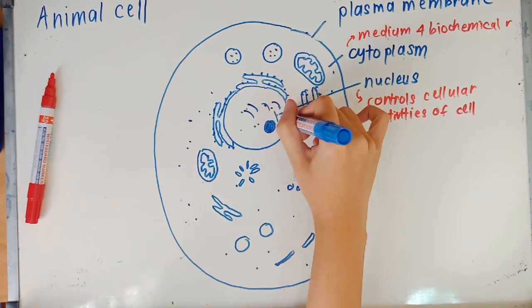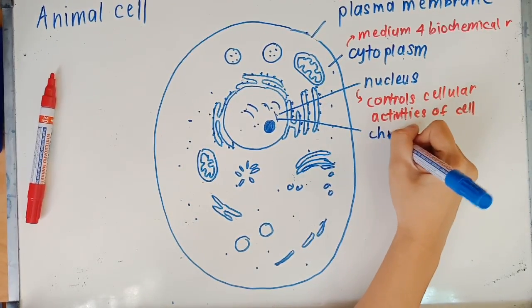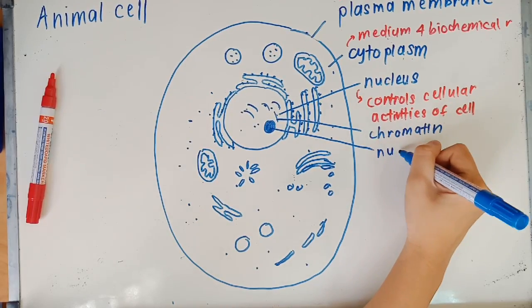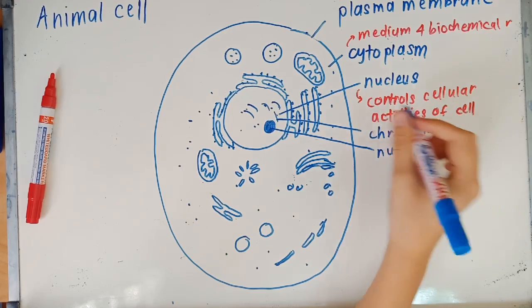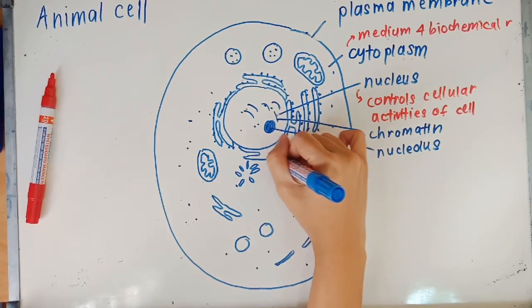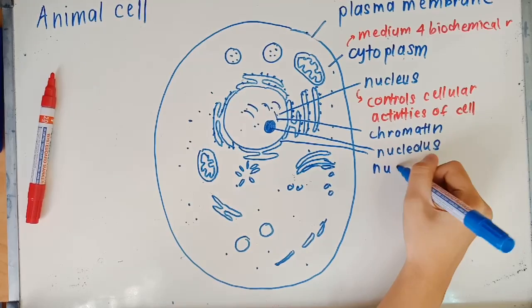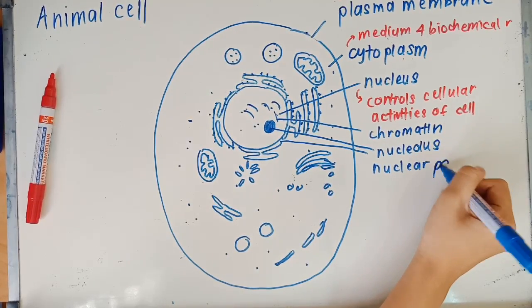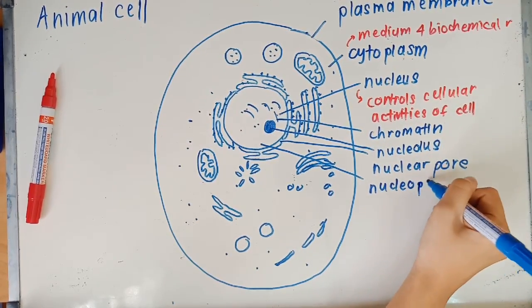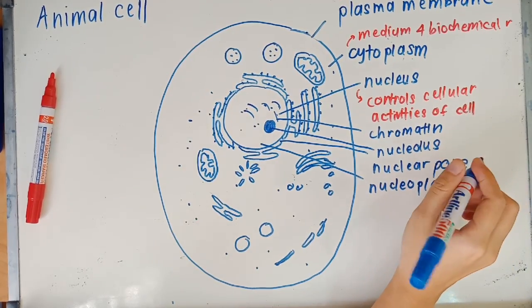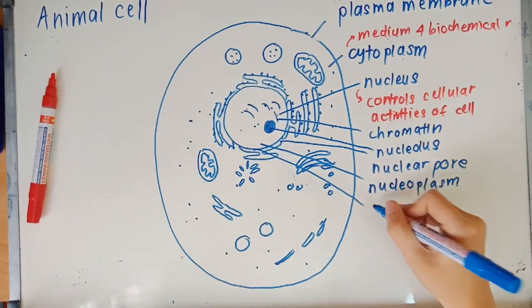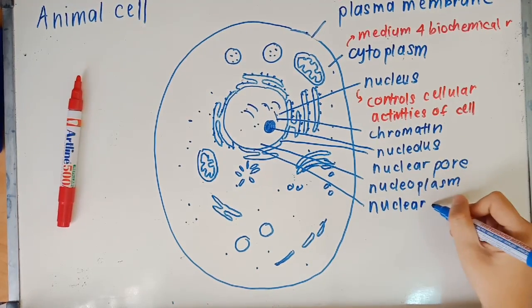Now we'll label the nucleus. These thread-like structures here are actually chromatin, which is the condensed form of chromosome. Then we have the dense circle in the middle, the colored one - it's the nucleolus. Next up is the tiny space between the two rough endoplasmic reticulum, there's a tiny gap there and that gap is called nuclear pore. Outside the nucleus we have the cytoplasm, and the space inside the nucleus will be called nucleoplasm. Then we have here the nuclear envelope.